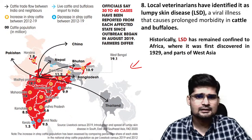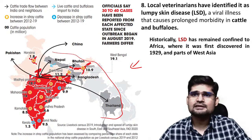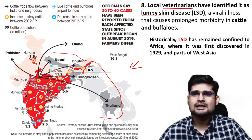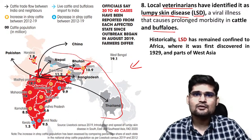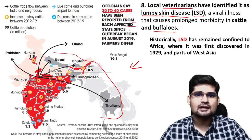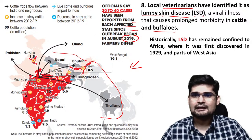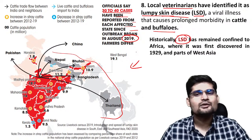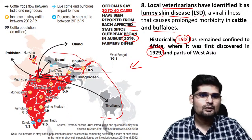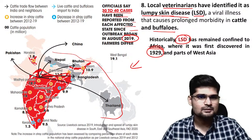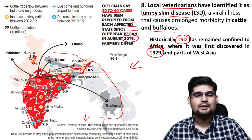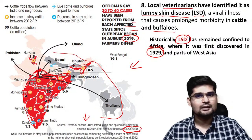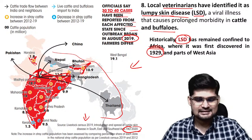Lumpy skin disease, LSD, is a viral disease occurring in cattle and buffaloes. Officials reported 30 to 40 cases from each affected state since the outbreak began in 2019. LSD was earlier confined only to African countries and was first discovered in 1929. The spread now covers almost all south Indian states, central India, parts of the Delhi-Haryana region, and northeastern regions. It was also part of the livestock census and FAO report 2020.